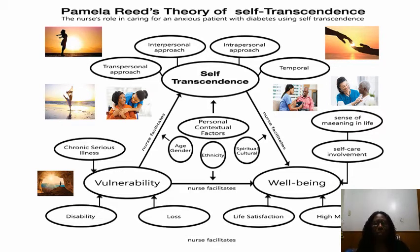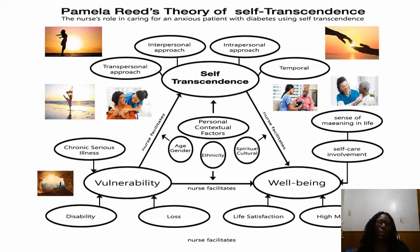There are three concepts related to self-transcendence. The first one is self-transcendence itself. The second, at the bottom, is vulnerability. And the third, on the other side at the bottom, is well-being. A person becomes vulnerable when there are serious chronic illnesses, as in the case of my patient who is diabetic, has lost a limb, which is a disability.